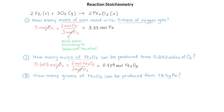Now let's calculate how many grams of Fe₂O₃ can be produced from 73.5 grams of iron. We do this calculation in the same way, except we will have a couple extra steps because we aren't starting with moles — we're starting with grams. We have 73.5 grams of iron, and we can't multiply by our mole ratio yet. So let's first convert our grams of iron into moles of iron using the periodic table and the molar mass. One mole of iron has a molar mass of 55.85 grams. We can cancel out the grams of iron, and we now have moles of iron.